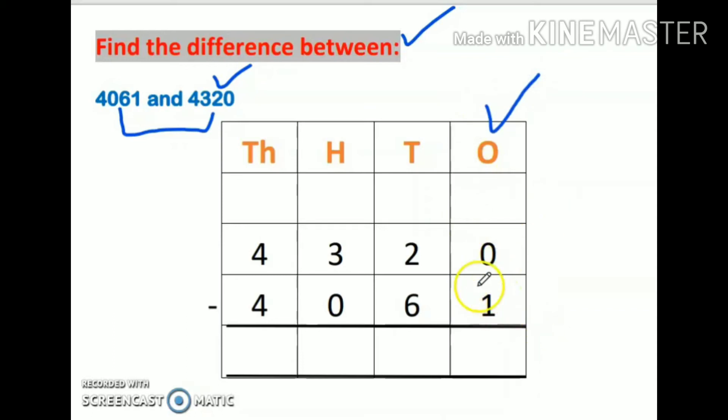Now I will start from one's place. Zero is smaller than one, so zero will borrow one from here. But one is still smaller, so it becomes 11 and this becomes 2. Now it's fine, so 10 minus 1 is 9.